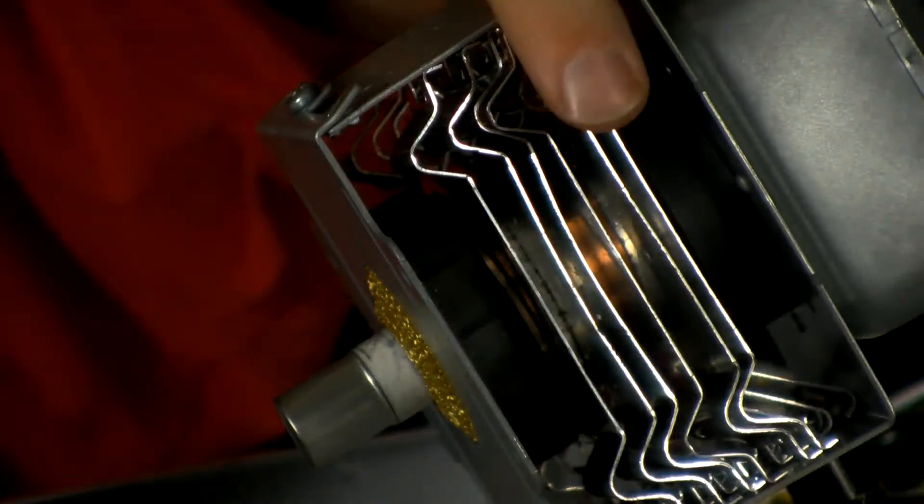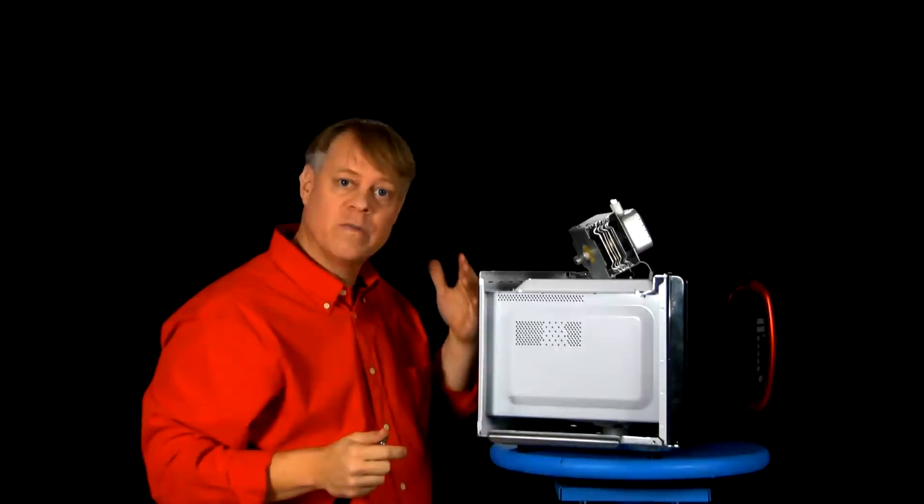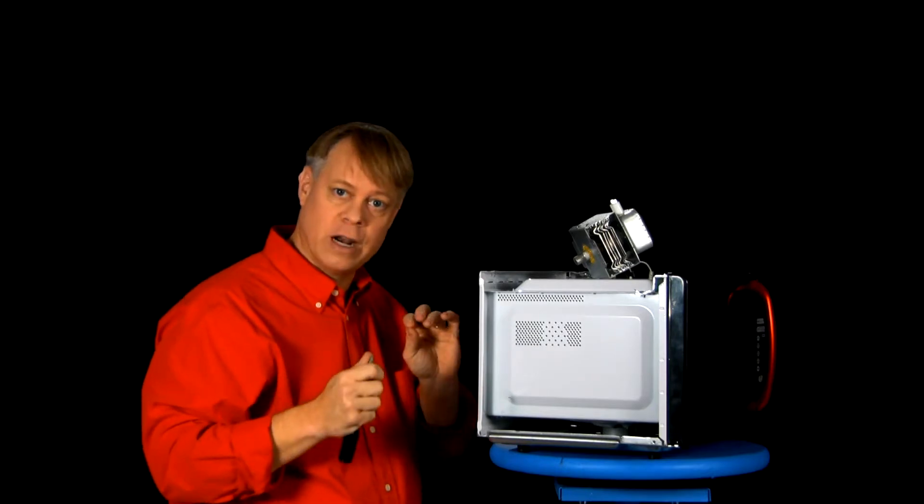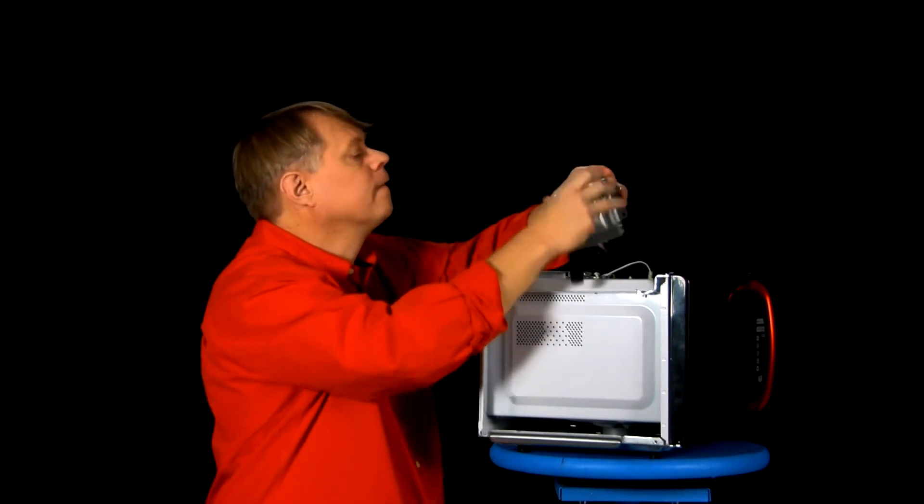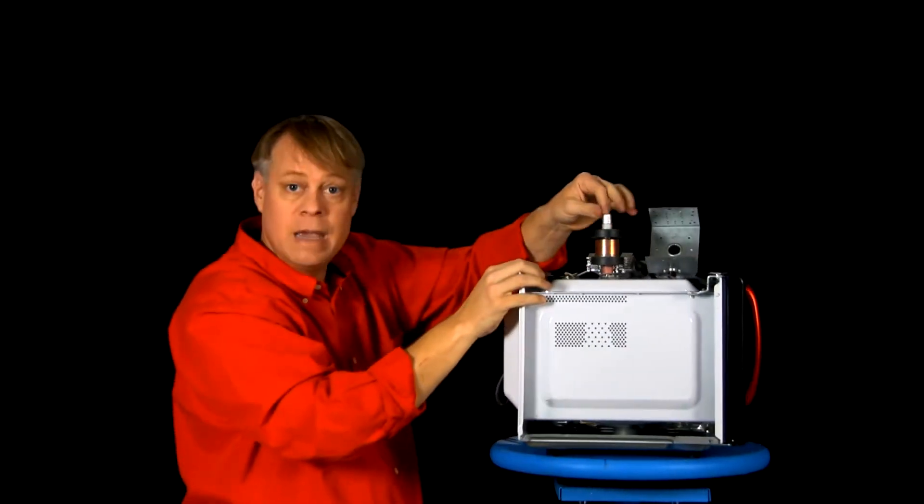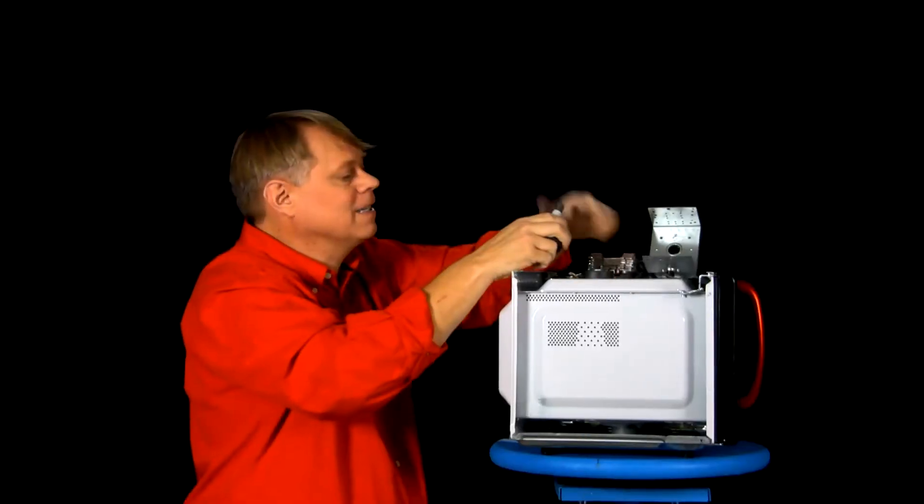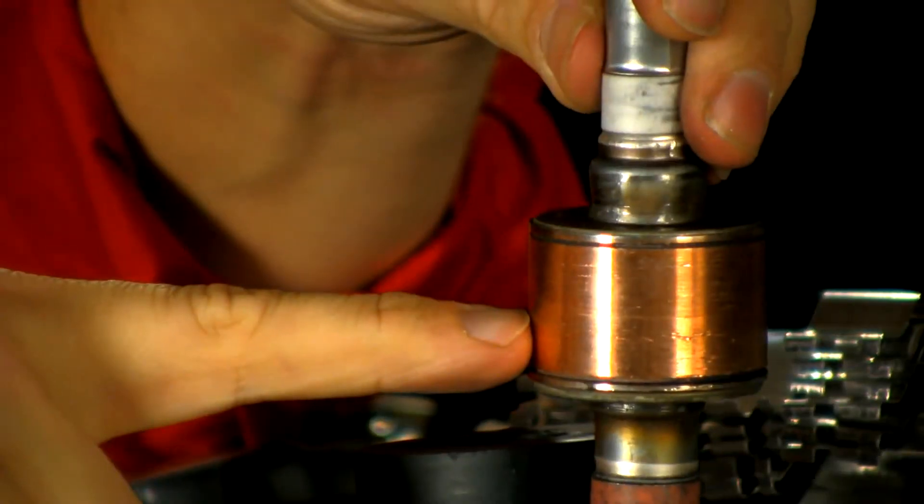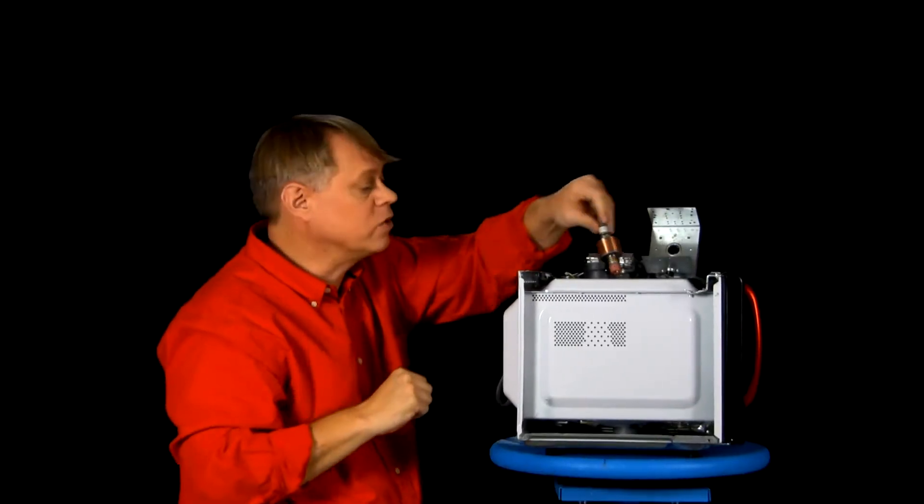The vacuum tube is inside here. These are cooling fins, thin pieces of metal that dissipate the heat as the magnetron operates. The key parts are these two magnets and the vacuum tube. Now, I have another one so you can see the inside.